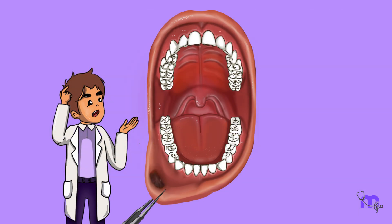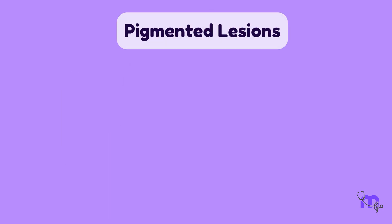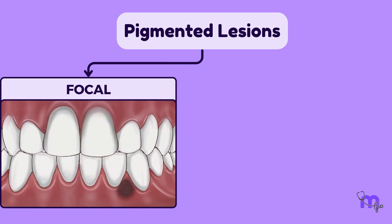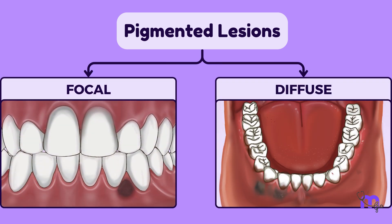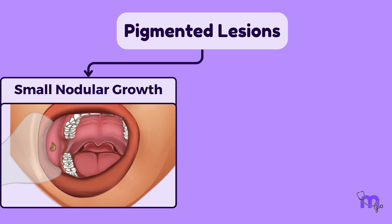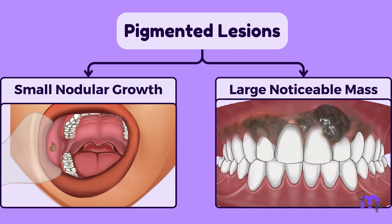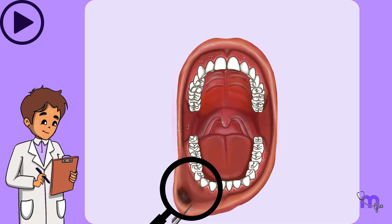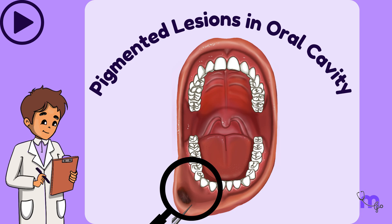Clinicians often face a challenge when identifying pigmented tissue in the mouth. The pigmentation of the mucosa can vary greatly, appearing focal or as a widespread diffused discoloration. These pigmentations can also take different shapes, ranging from a small nodular growth to a large noticeable mass. This video explores the thought processes dentists use to diagnose pigmented lesions in the oral cavity.